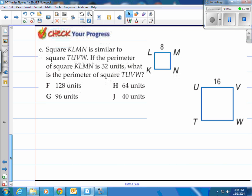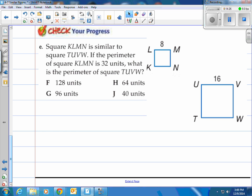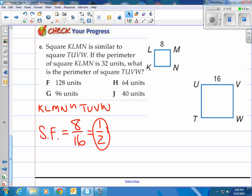How about you give it a shot right here. Stop the video. Try this one. Come on back and see how you did. Square KLMN is similar to square TUVW. If the perimeter of square KLMN is 32 units, what is the perimeter of square TUVW? Well, we're starting with this statement. That's the first sentence. KLMN is similar to TUVW. So let's look at the scale factor.